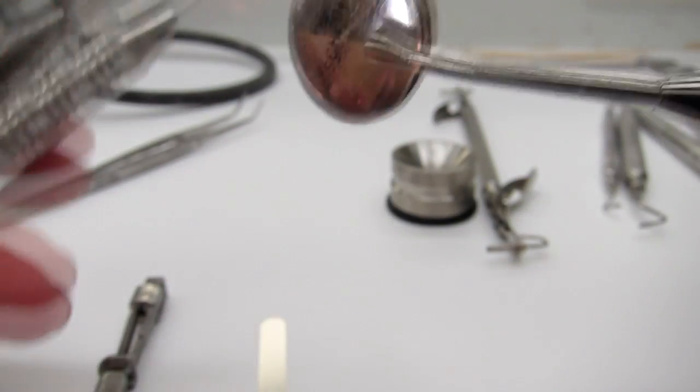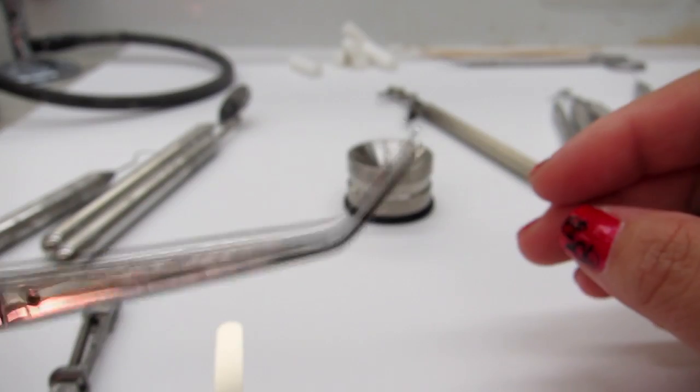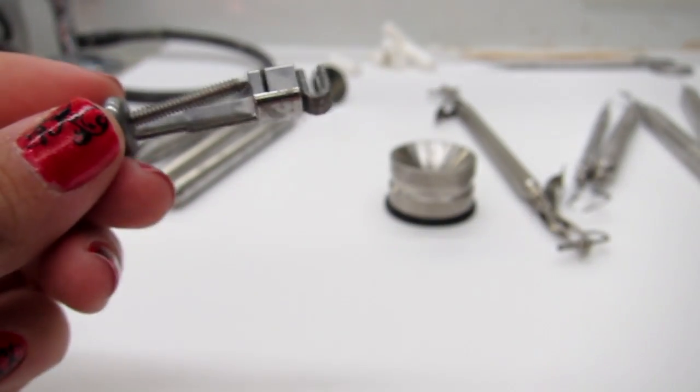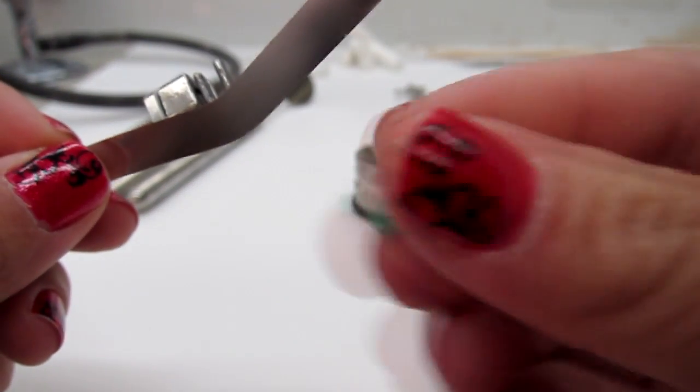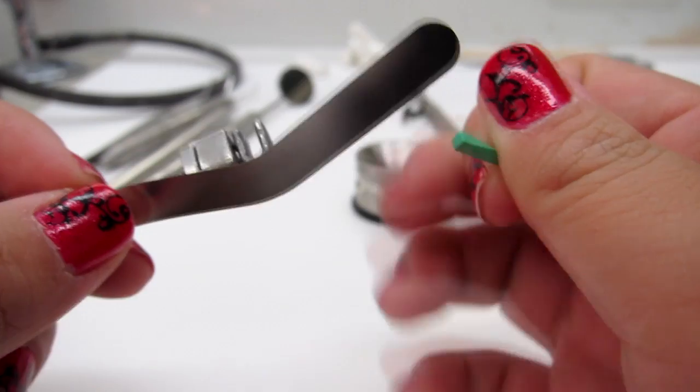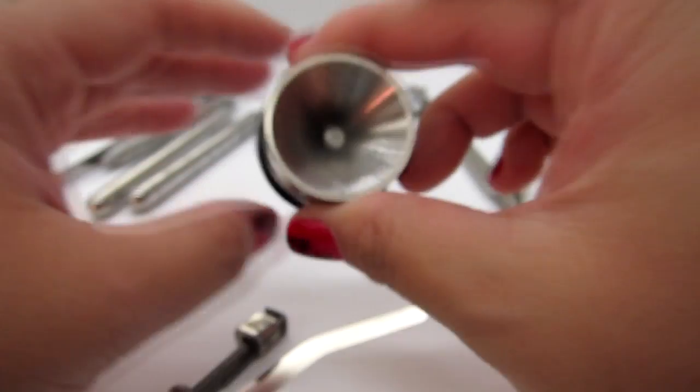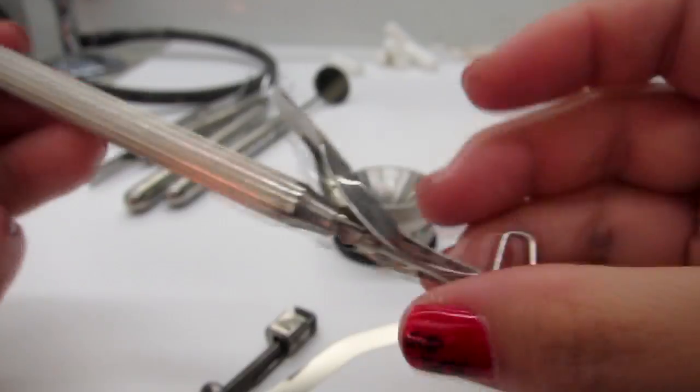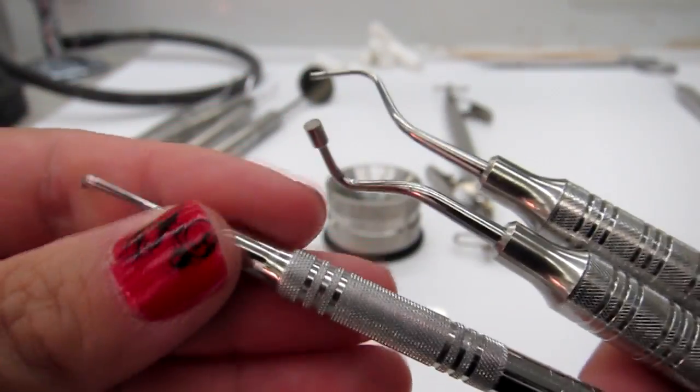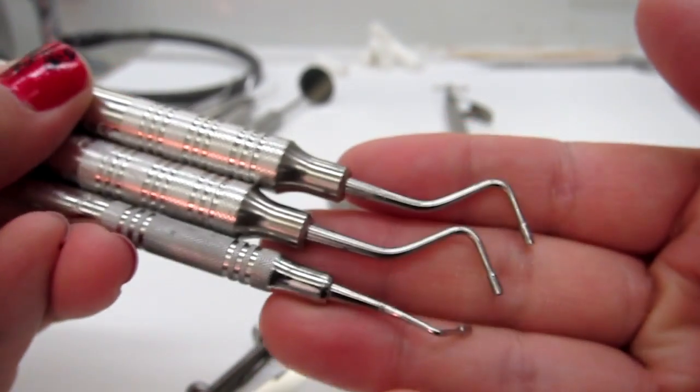First thing you're going to need is your basic everything, your mirror, you don't need a probe, but you need an explorer for sure and you need college pliers. You're going to need a matrix band and a Takamaya retainer and you're going to need a wedge. You want a nice thick wedge so that way you can separate the teeth a little and make room for not only the band but a nice tight contact. You're going to need your amalgam well and an amalgam carrier and then you're going to need your condensers. They come in all different sizes. You start with the smallest one and then you work your way up.